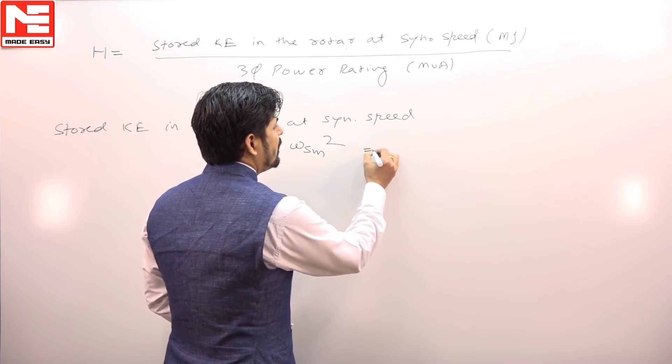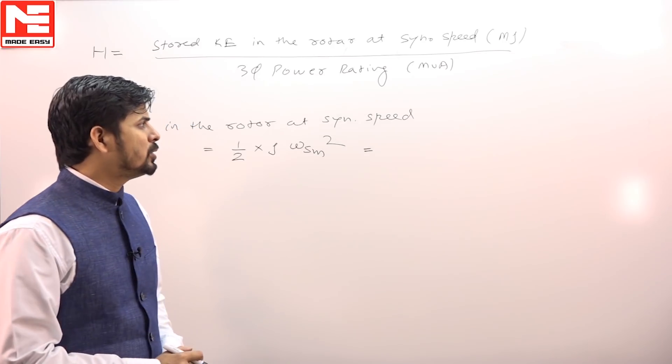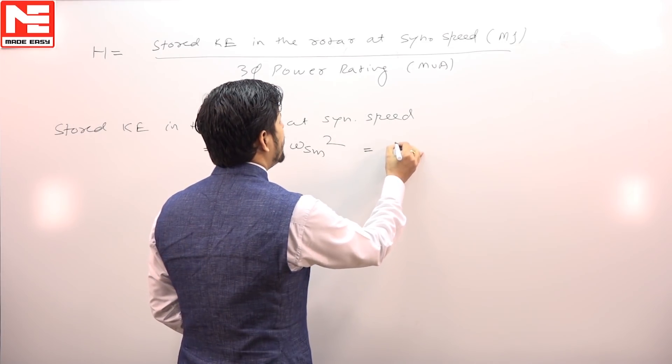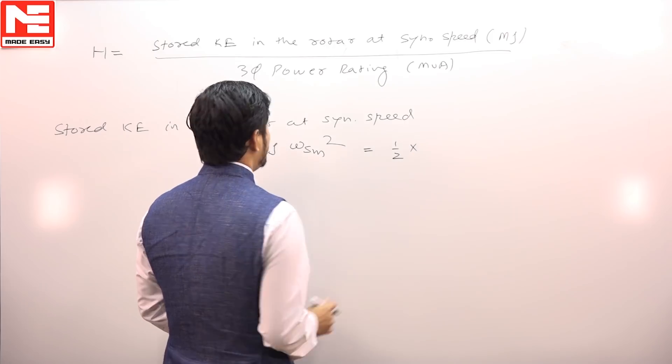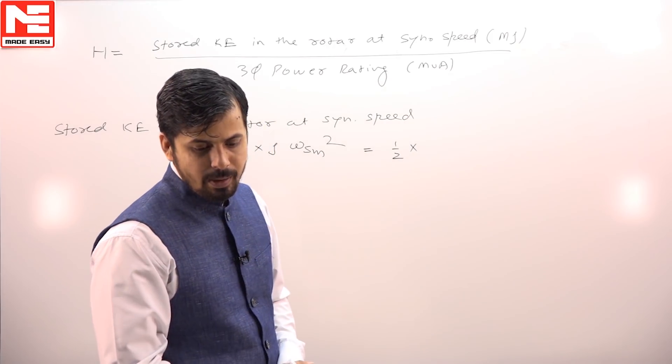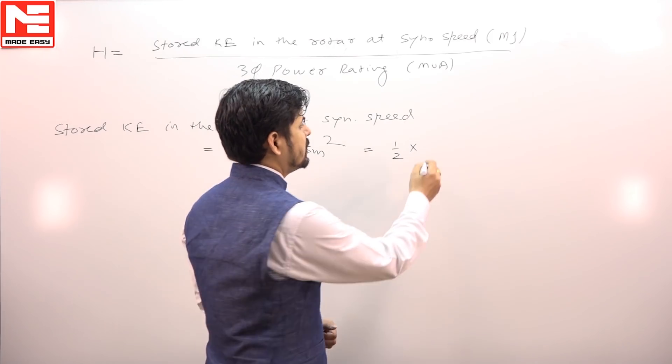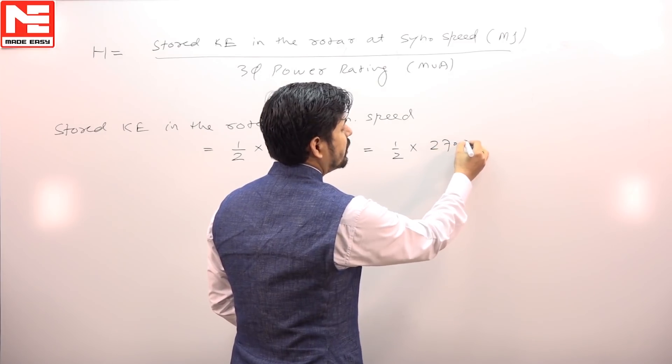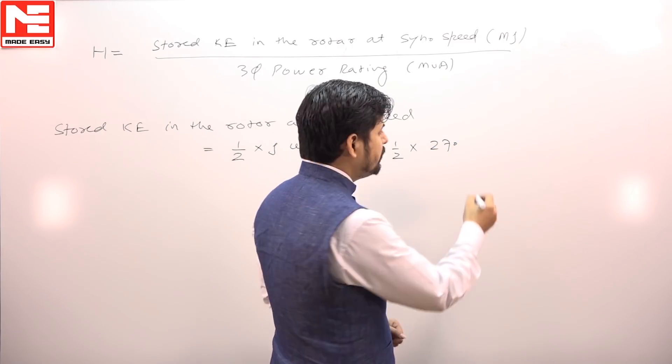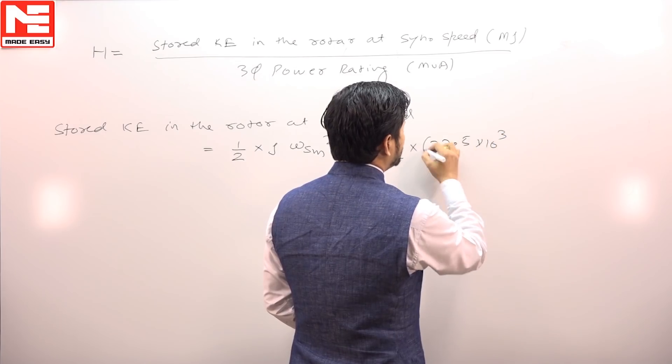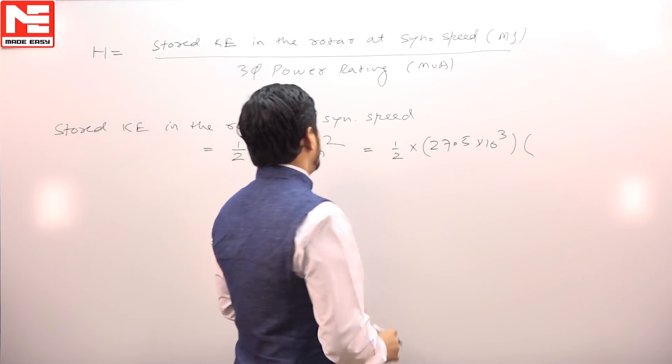We can find the value of stored kinetic energy at synchronous speed which is equal to 1 by 2 into the value for moment of inertia J, which is given as 27.5 times 10 to the power 3.